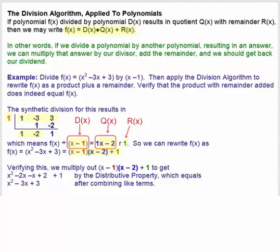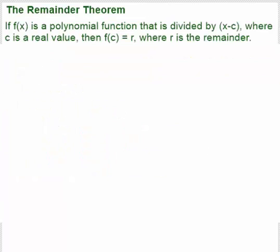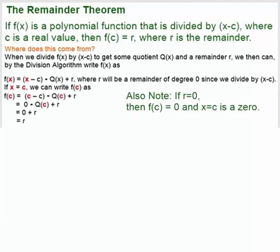We can use this result to show what's called the remainder theorem. The remainder theorem says if f of x is a polynomial function that is divided by x minus c, where c is a real value, then f of c equals r, the remainder.